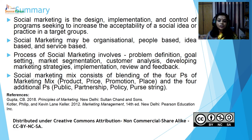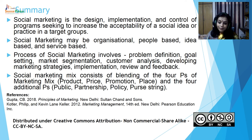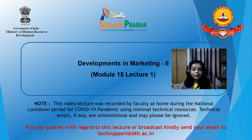To summarize this lecture: Social marketing is the design, implementation and control of programs seeking to increase the acceptability of a social idea or practice in a target group. Social marketing may be organizational, people-based, idea-based or service-based. The process of social marketing involves problem definition, goal setting, market segmentation, customer analysis, developing marketing strategies, implementation, review and feedback. The social marketing mix consists of blending the four traditional P's — product, price, promotion and place — and four additional P's — public, partnership, policy and purse string. Thank you very much students. This was Developments in Marketing, Part 2, Module 15, Lecture 1.